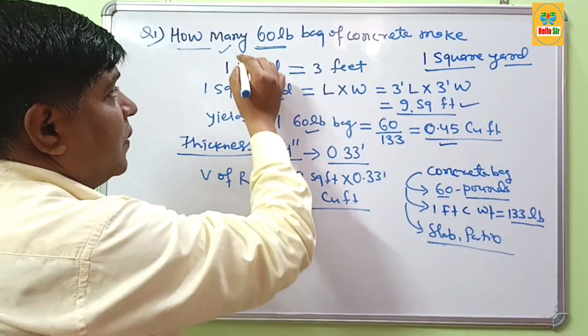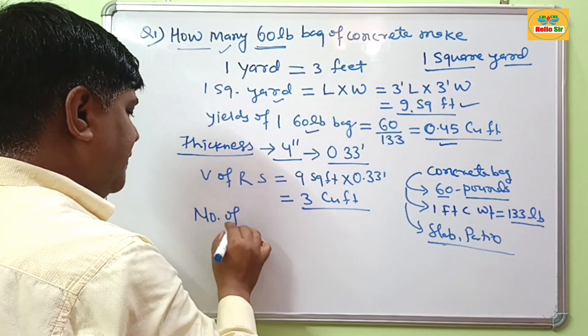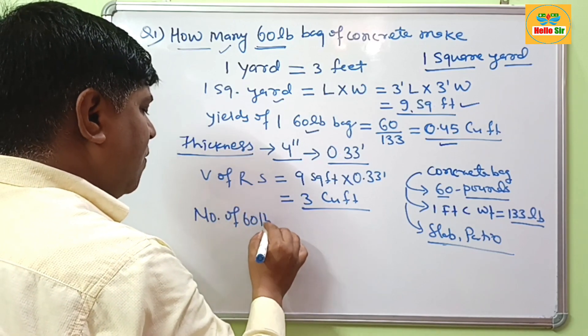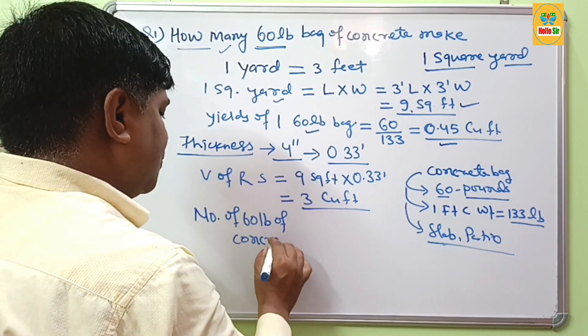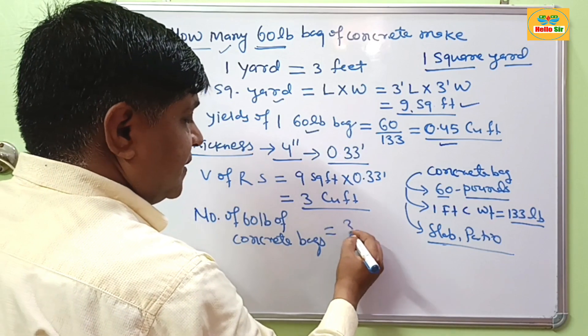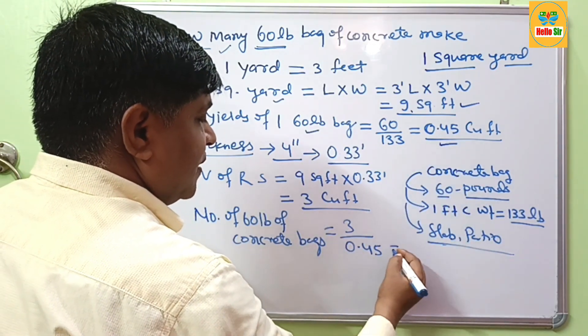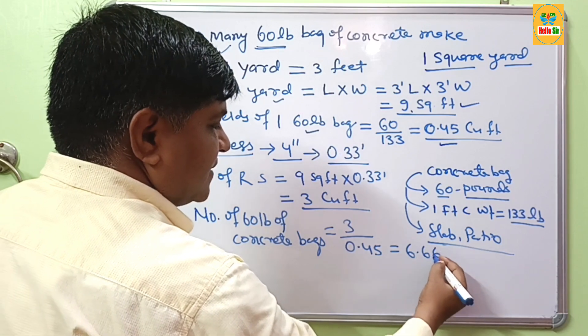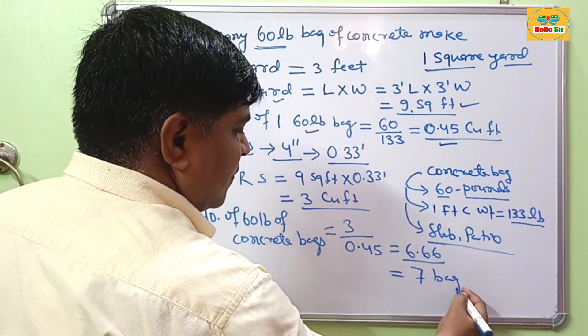And you have to calculate number of 60-pound bags. Then the number of 60-pound bags of concrete equals: if you divide this 3 cubic feet by 0.45, this will come about 6.66 bags, which is near about 7 bags.